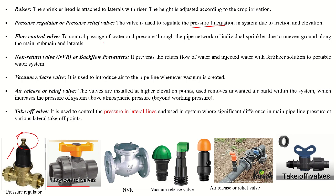The flow control valve controls the passage or movement of water from the source to the main, sub-main, or individual pipe network system, especially in uneven or undulating areas. The non-return valve, also called NRV or backflow preventer valve, prevents backwater when the pump system shuts off and also prevents fertilizer from entering the water source.